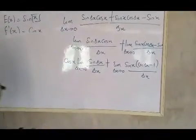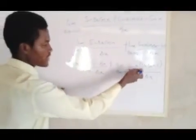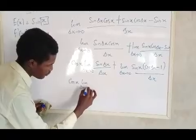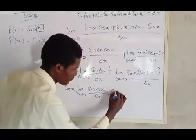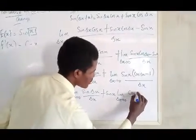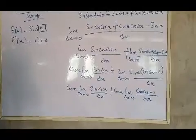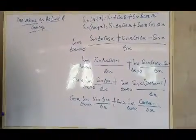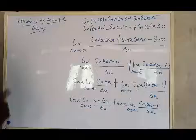We now have: cos x times limit as delta x approaches zero of sine delta x over delta x, plus sine x times limit as delta x approaches zero of cos delta x minus 1 over delta x. From our special limits — which I covered in my last two classes on limits, check that video on the playlist — we know that the limit as x approaches zero of sine x over x equals 1, and the limit as x approaches zero of cos x minus 1 over x equals 0.